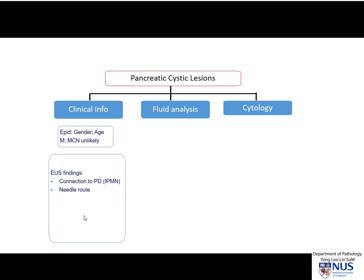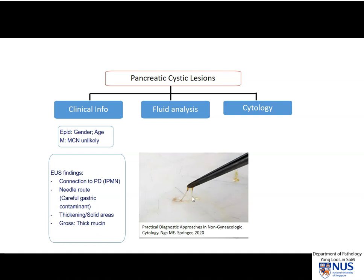The needle route is also important because if the needle passes through the stomach, the gastric foveolar epithelium may also resemble low-grade mucinous neoplasms, so we have to be aware of this. And if there are any solid areas or thickening in the cyst wall, this may be a potential danger sign that we may be dealing with a more high-grade lesion. A gross finding of thick mucin is also very helpful — if you have mucin that strings out, this indicates that we are most likely dealing with a mucin-producing cystic neoplasm, rather than just gastric contaminant mucin.